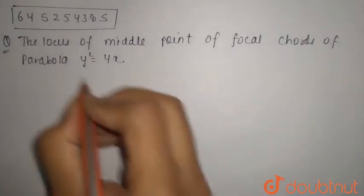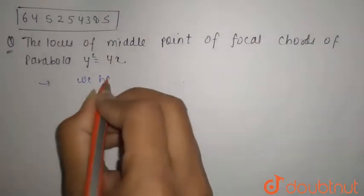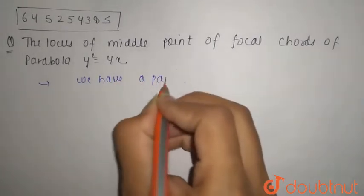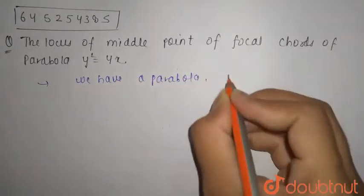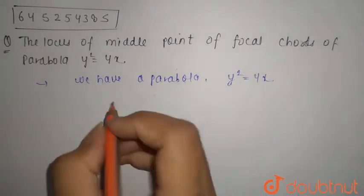First of all, we have a parabola y² = 4x. We know that the ends of focal chords are at specific coordinates.